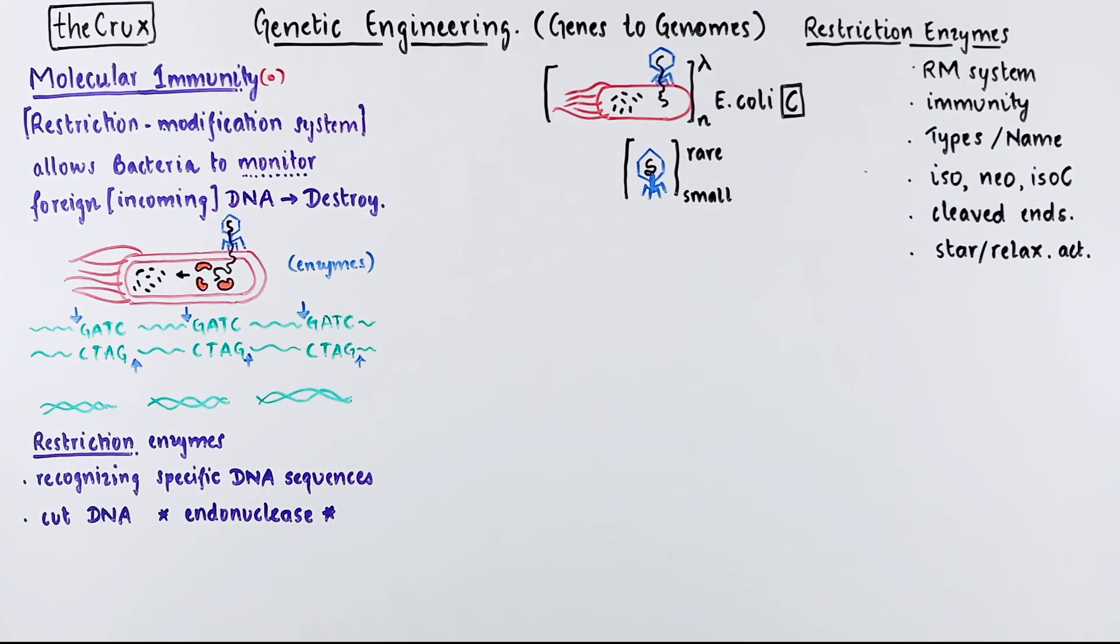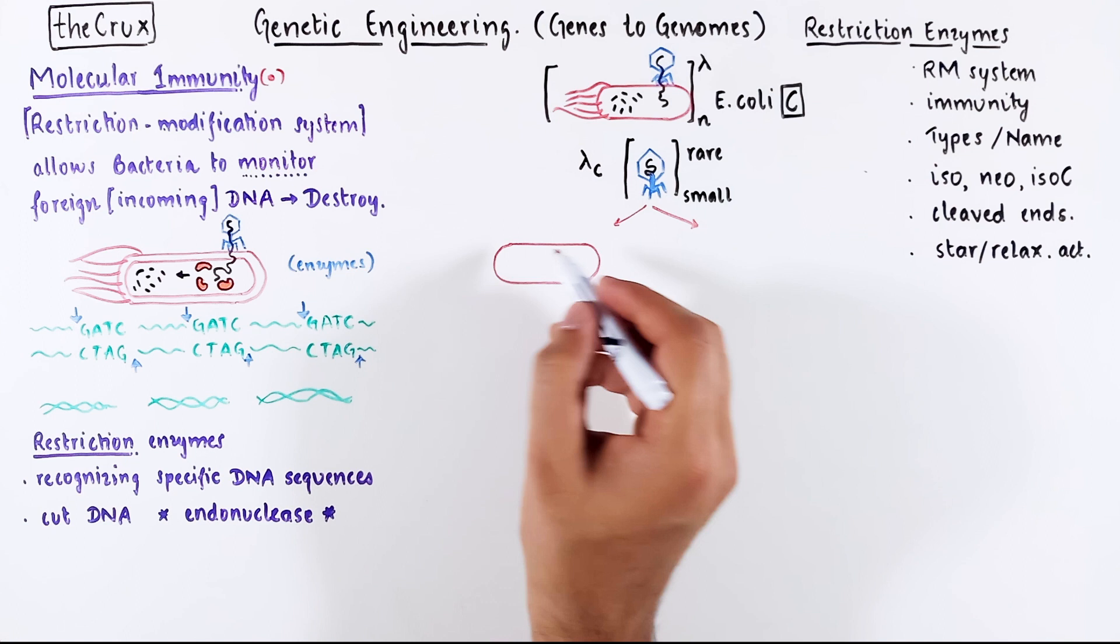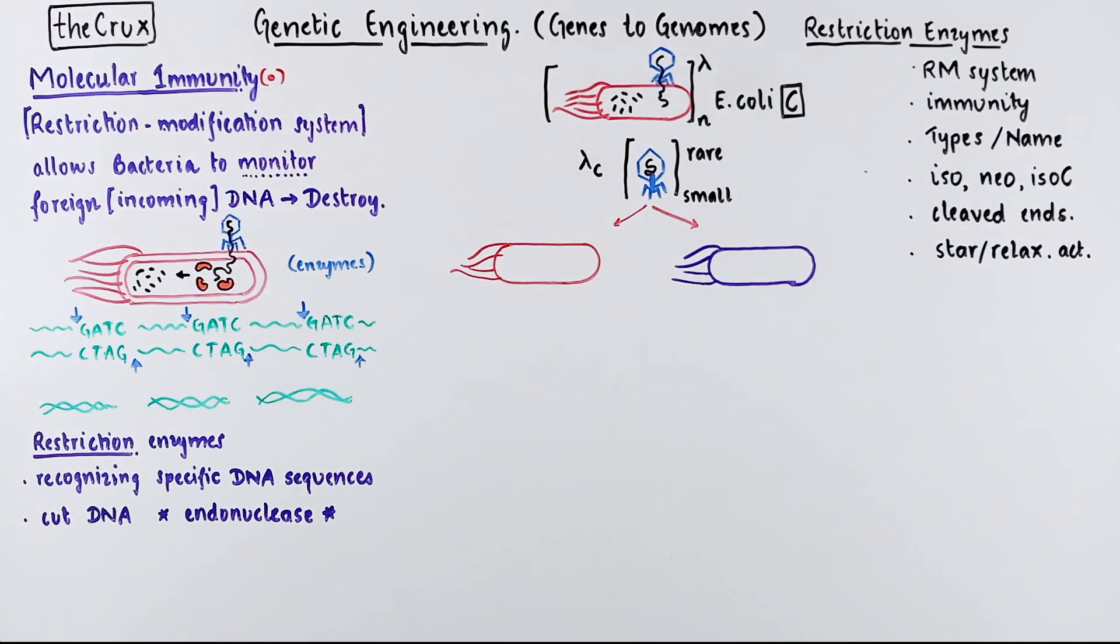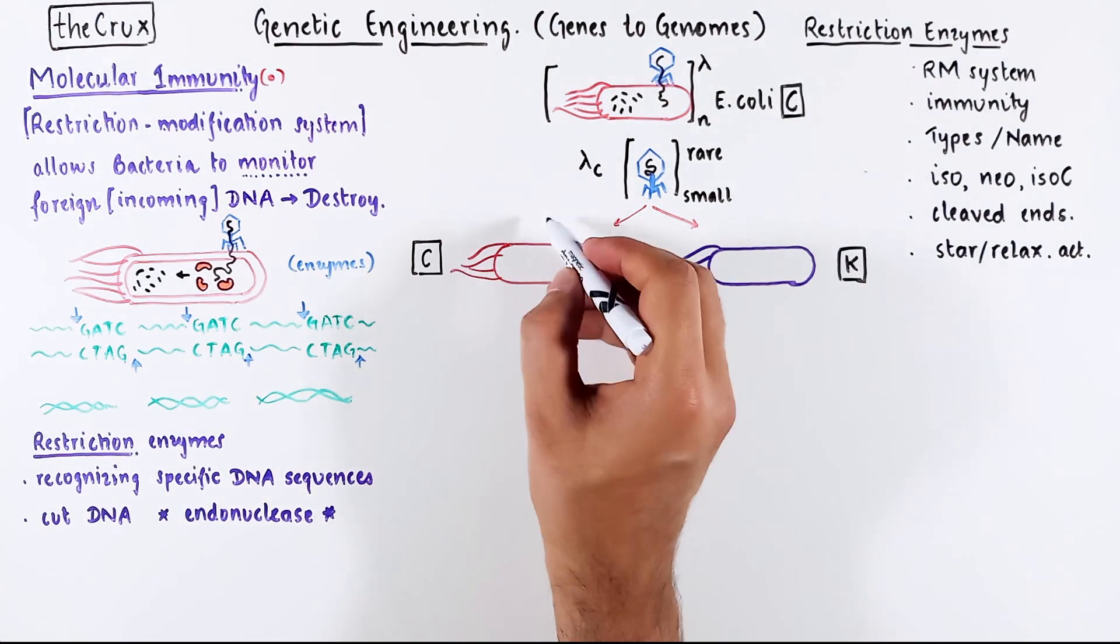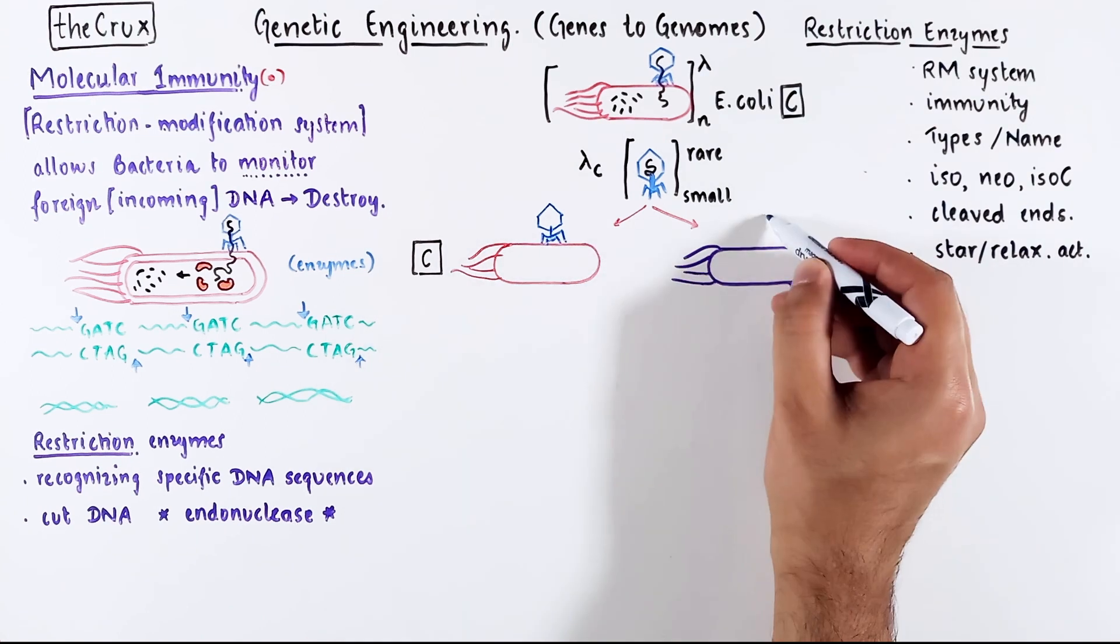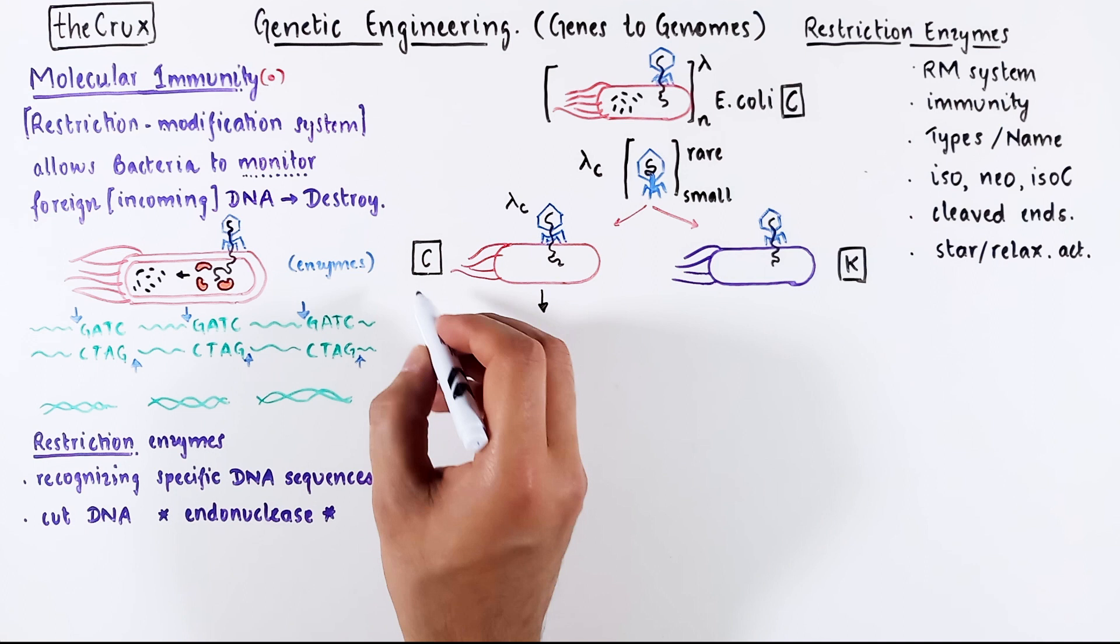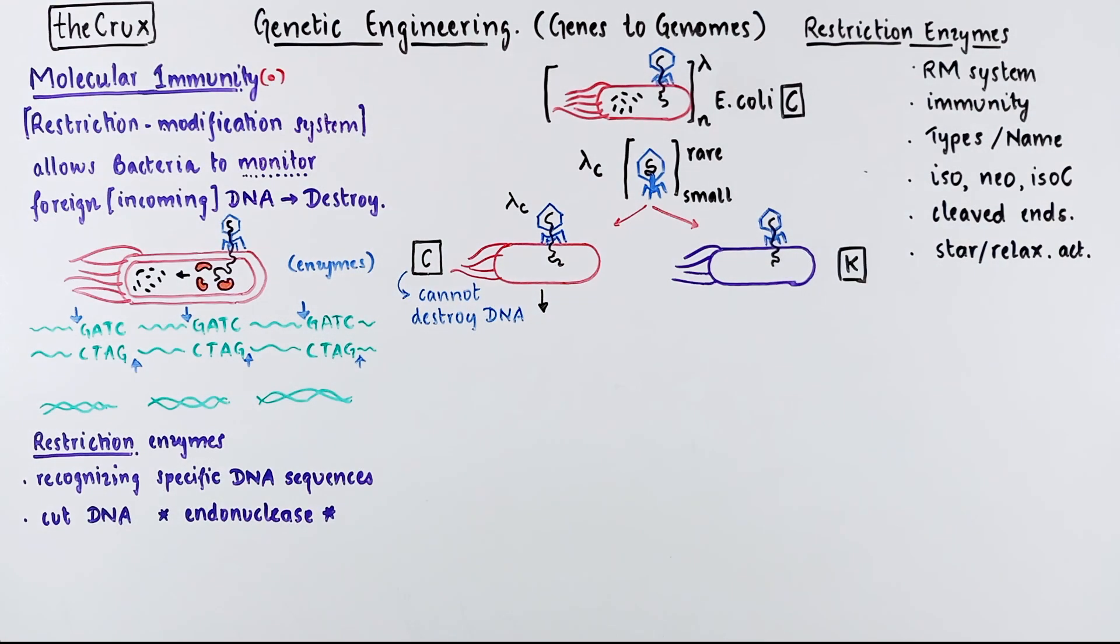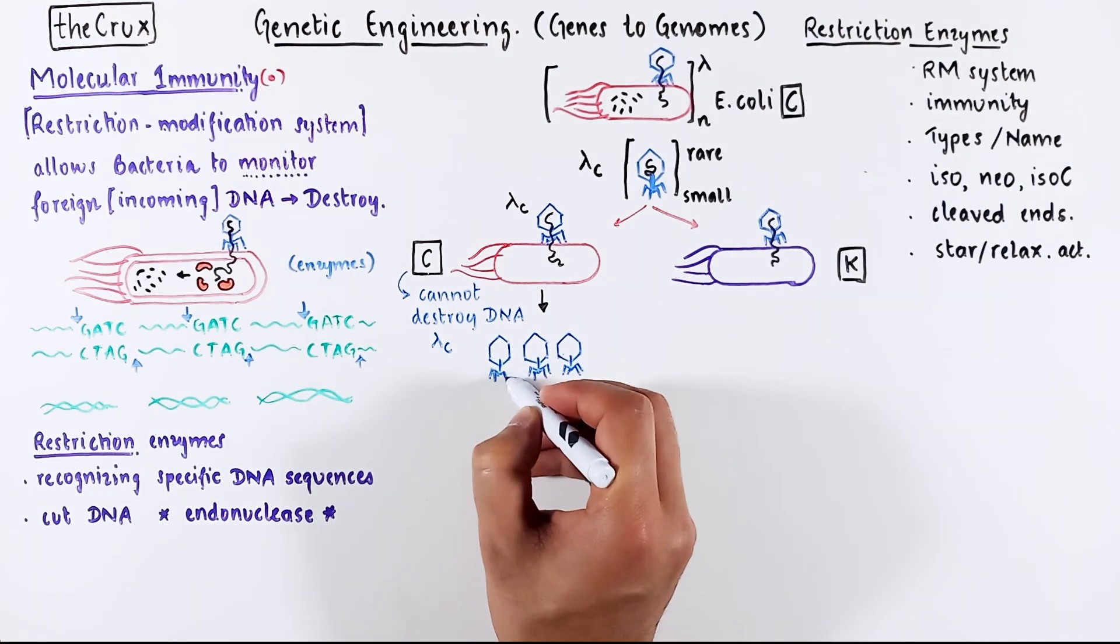Since this virus was made inside E. coli C, we will call this virus particle lambda C. You can take this lambda C phage and reinfect the E. coli C, or you can infect a new type of E. coli strain called K. The lambda C will inject its DNA into both of these bacteria. However, this time around, the E. coli C is unable to destroy lambda C DNA. This is interesting. As a result, you get a lot of virus particles from this infection. This is not a rare event.